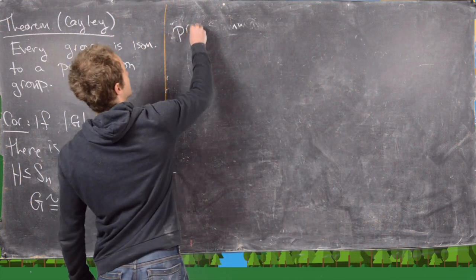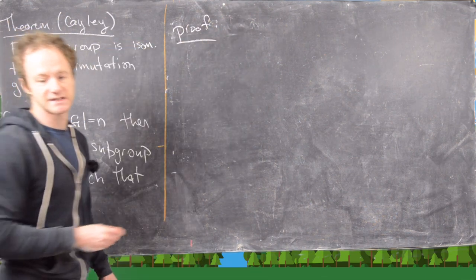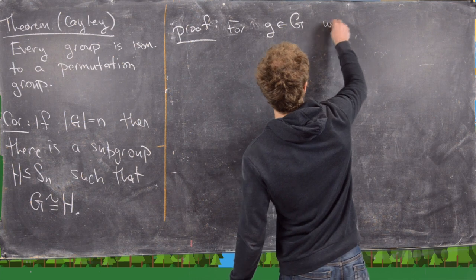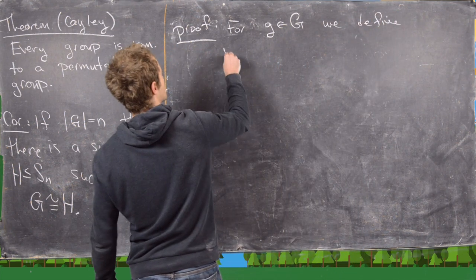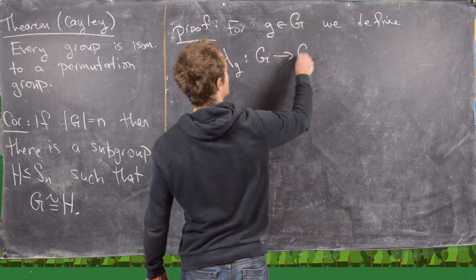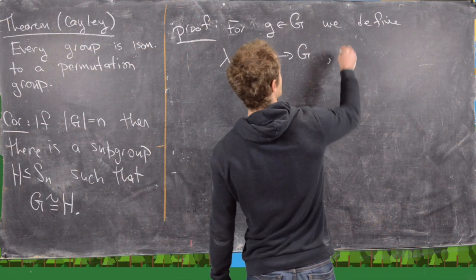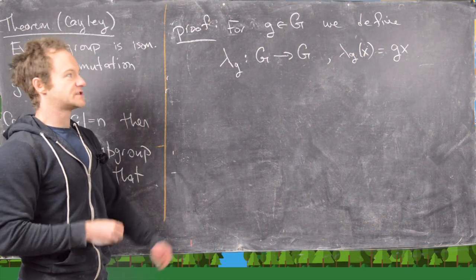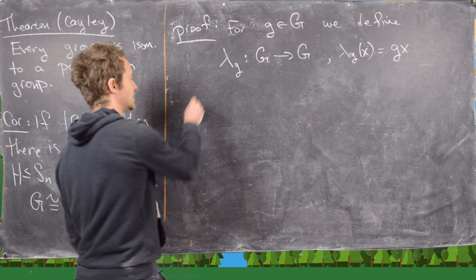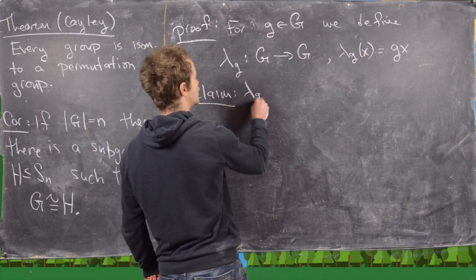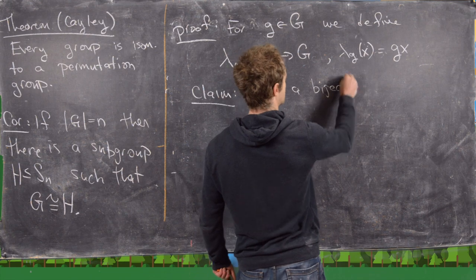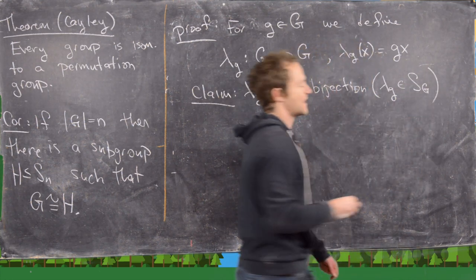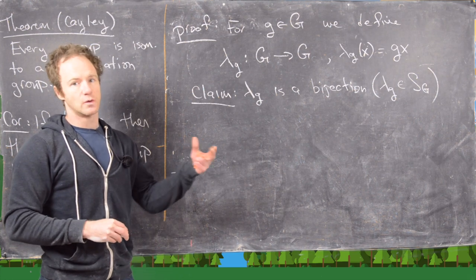Let's look at the proof of this theorem first. So let's say we have a little g in big G and we want to define the following map. We'll call it λ_g and it goes from the group to itself. It's going to be defined as: λ_g evaluated at x is g times x. This is not a homomorphism or anything, but it will be a bijection. So our claim is that λ_g is an element of the symmetric group S_G of the set underlying the group itself.